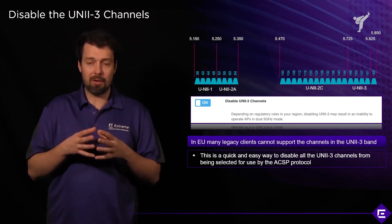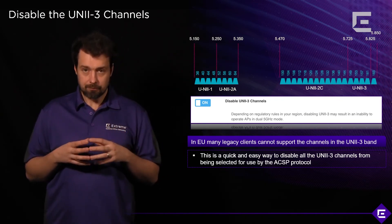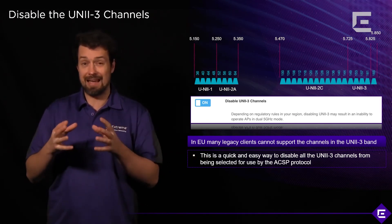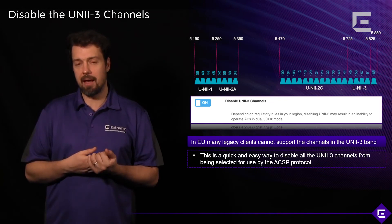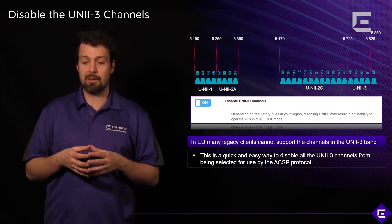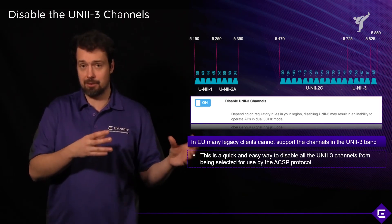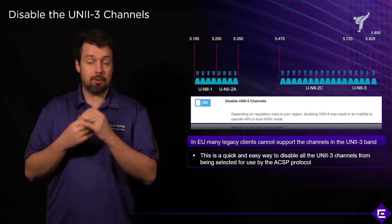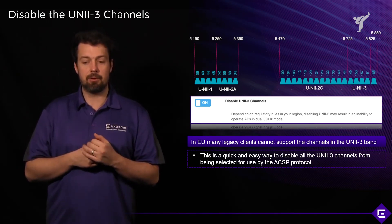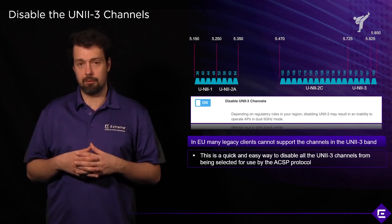One of the ways to quickly find out what kind of clients you have and which channel plan they support is by going to your Client 360 view. You'll be able to see the maximum capabilities of the clients in your network and quickly identify whether they actually support these channels — that will give you good feedback on whether to keep the UNII-3 channel band on or off. If you need to turn it off, there's a quick and easy way: in a radio profile, just check the 'Disable UNII-3 channels' radio button.